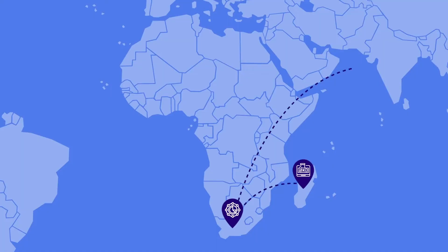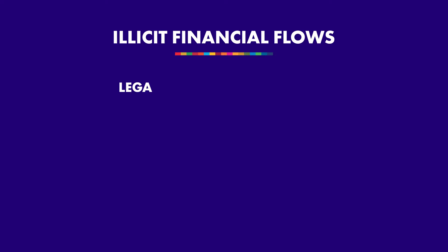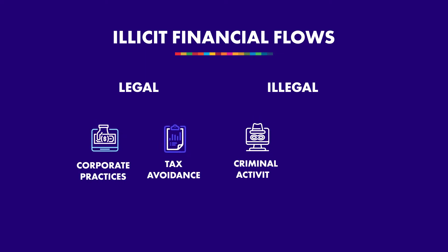First, a typology was needed to identify and separate the main sources and channels of IFFs, and also to identify and separate currently legal from illegal economic activities generating IFFs. Illegal is also illicit, but there can be a number of activities and practices that are formally legal, but many people would still consider them illicit from, for example, a more ethical perspective.